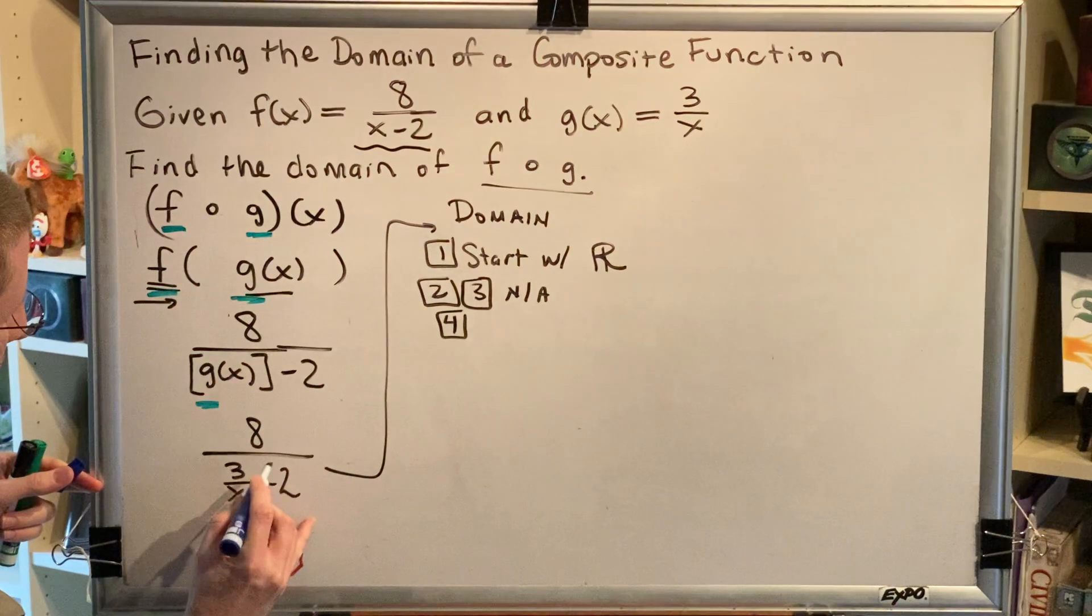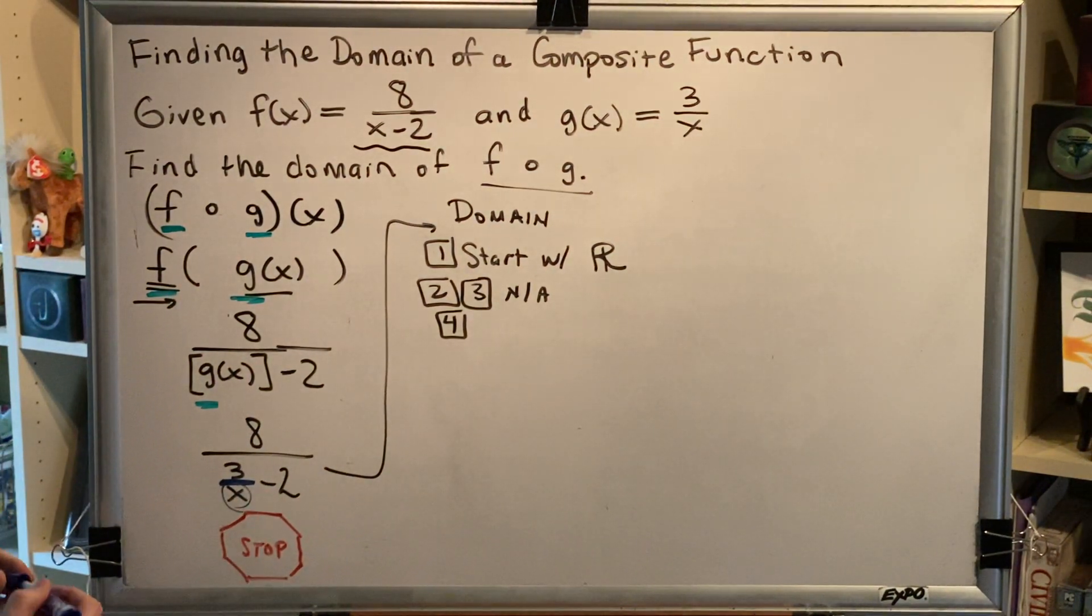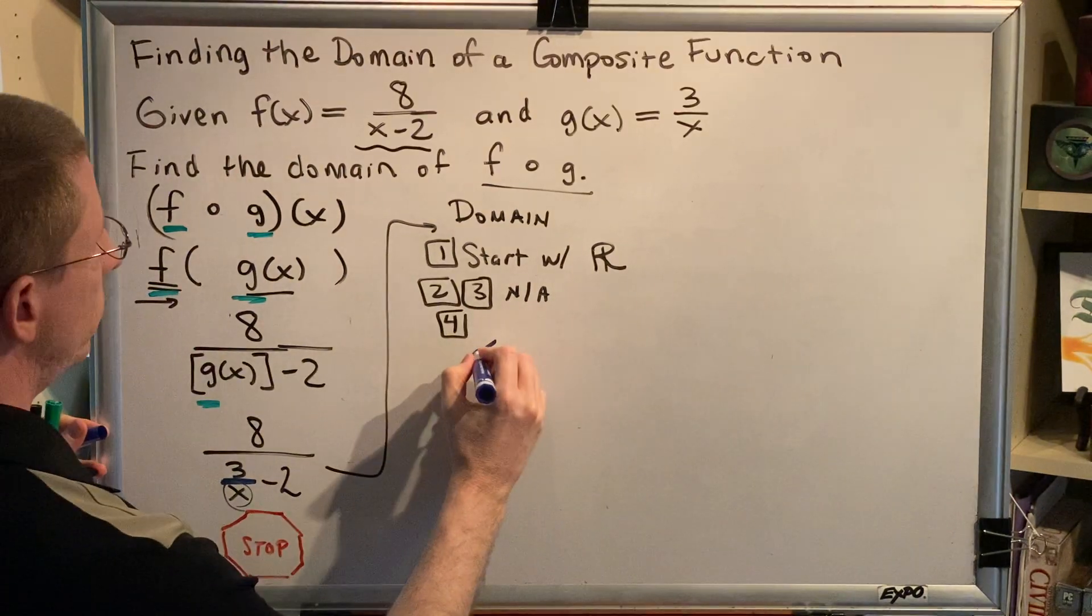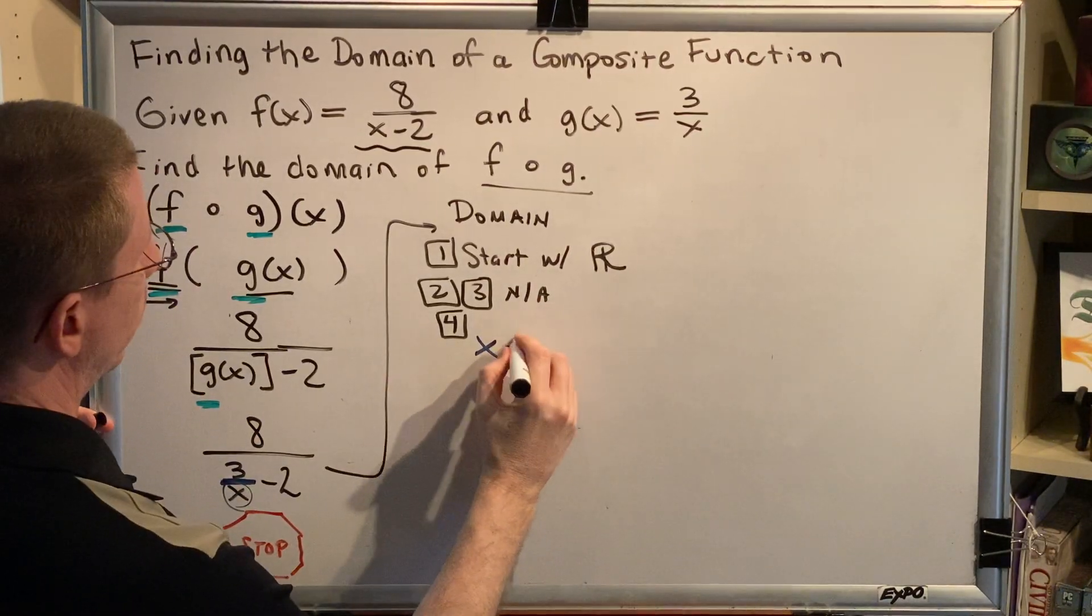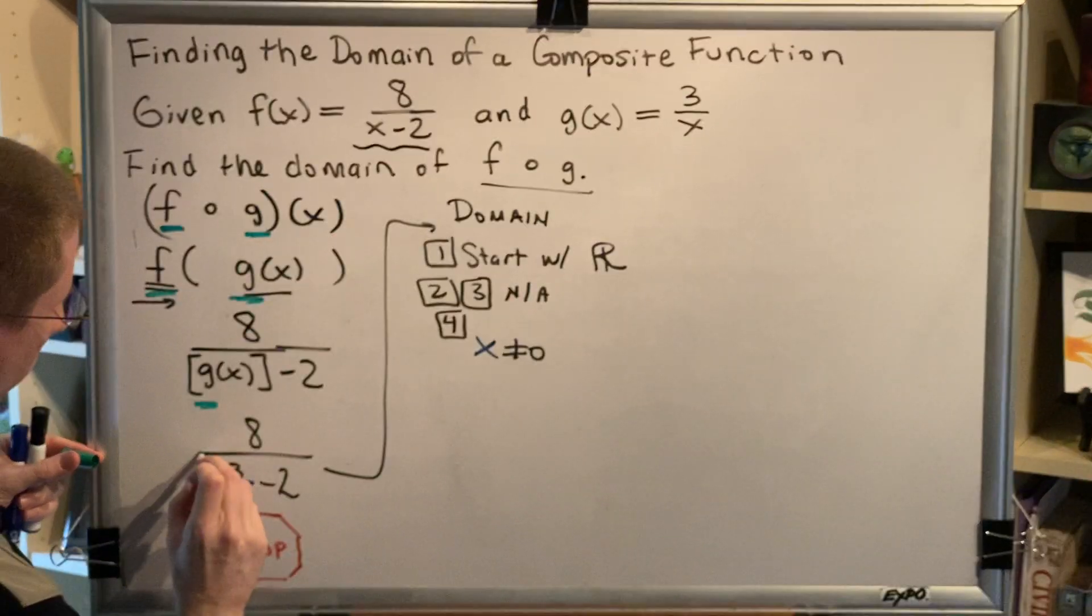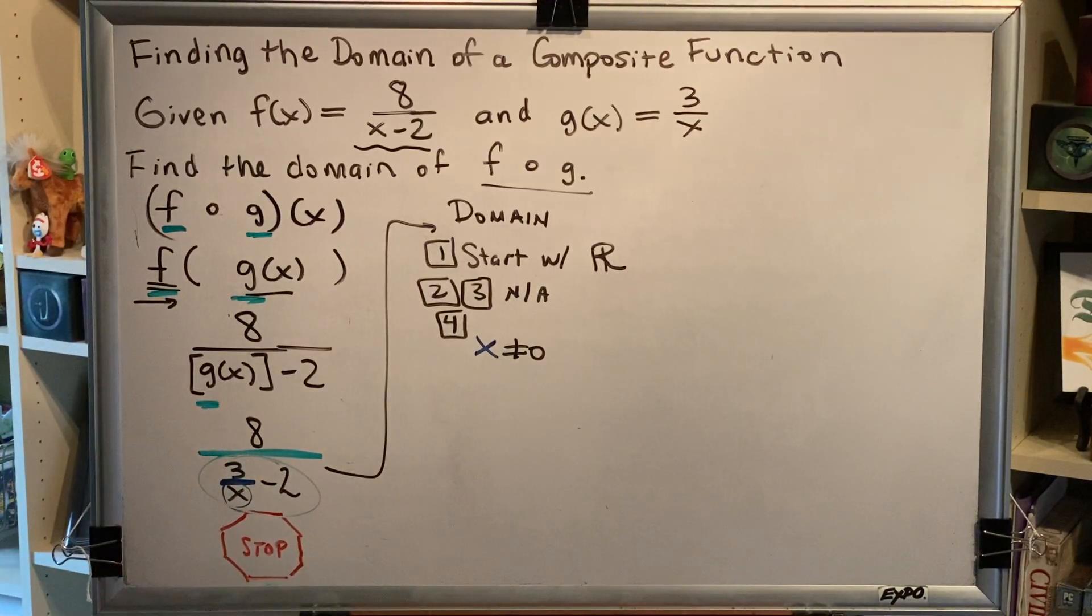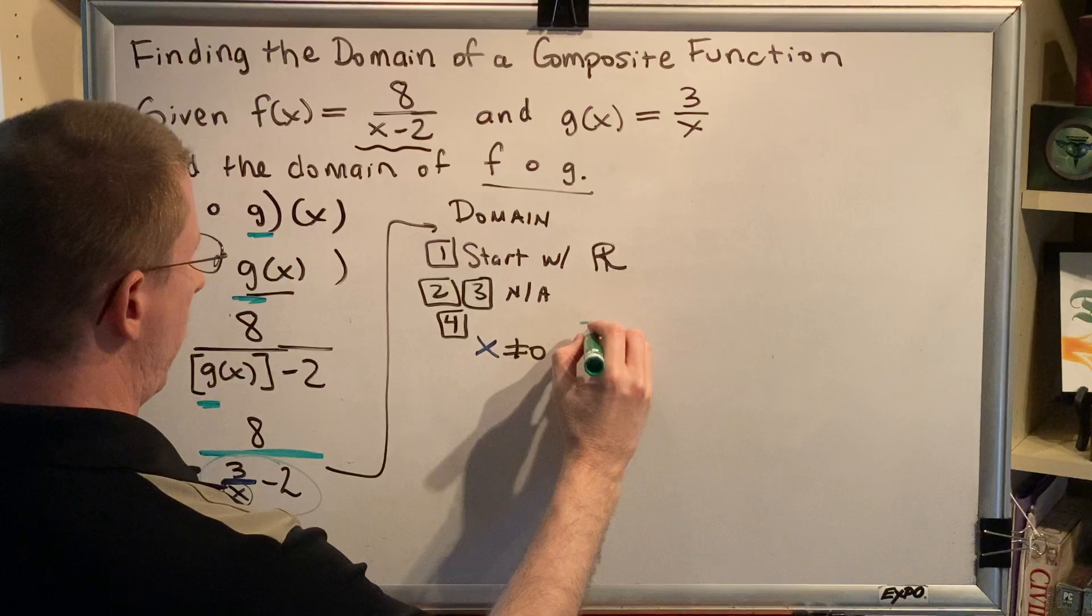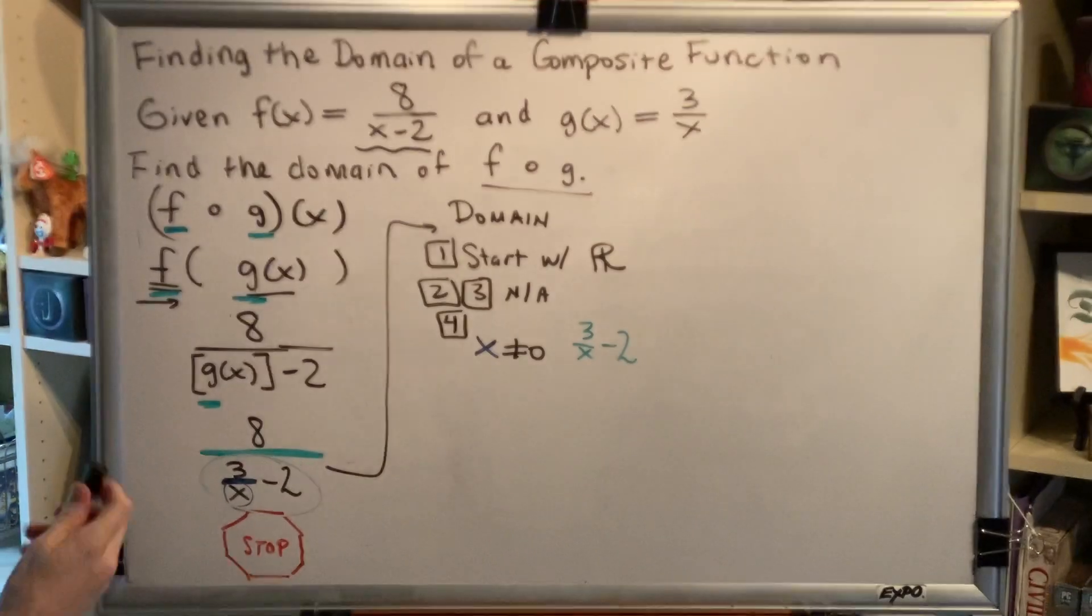So for example, this little fraction bar right here, anything underneath it is a denominator. So that x is not allowed to be zero. And this fraction bar right here, the long one, that means that anything underneath it is not allowed to be zero. So that tells me that three over x subtract two is not allowed to be zero.